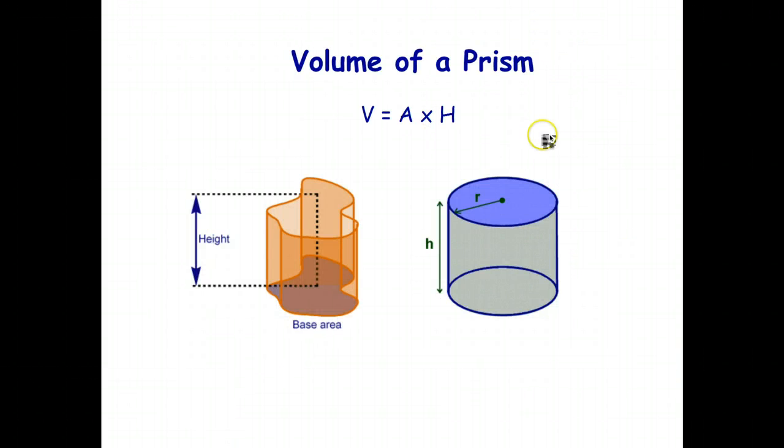Now, volume of a prism, one formula, volume equals area of the base times the height. Note that I include cylinders in my definition of a prism since it fits the formula.